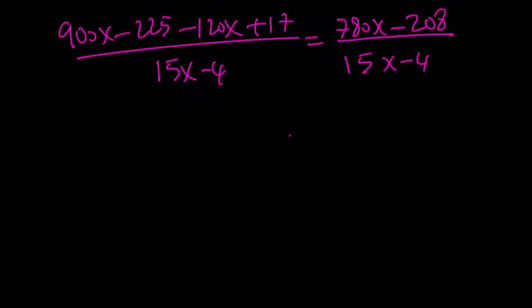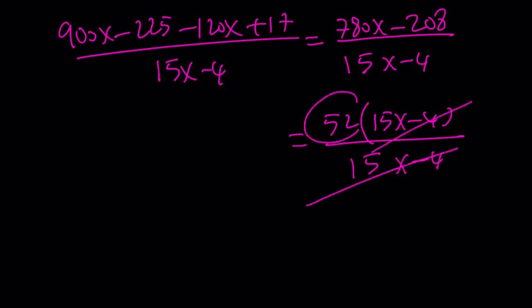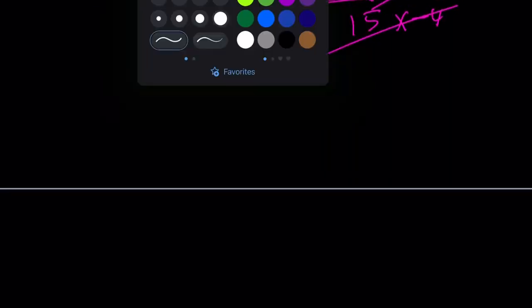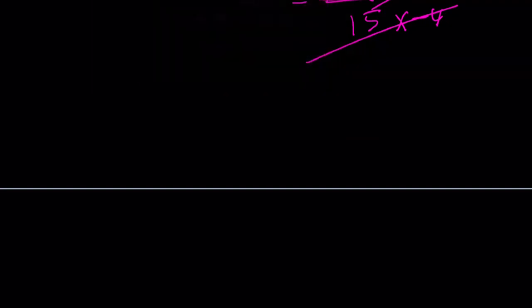And luckily, our numerator is 52 times 15x minus 4. Because if you factor out a common factor, that is going to be 52. And 15x minus 4 cancels out. x does not equal 4 fifteenths. And the answer becomes 52. And that will be our third method. So we're going to go ahead and talk about the second method next.